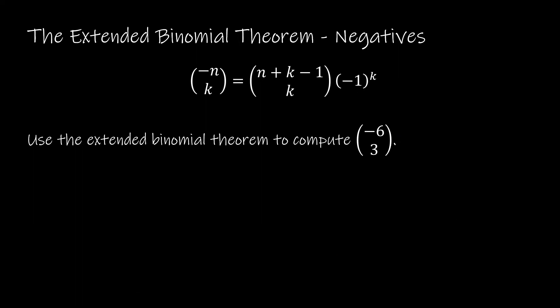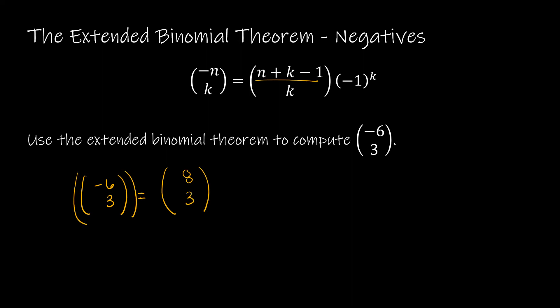So how can I compute (−6 choose 3)? Using the formula, that's (6+3−1 choose 3) = (8 choose 3), multiplied by (−1)^3. Negative 1 to the third power is −1, so the final solution is −(8 choose 3). Sometimes we write a double bracket around the 6 and 3 to denote combinations with repetition — that's up to you.